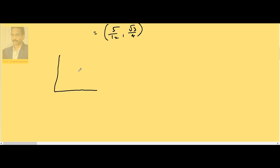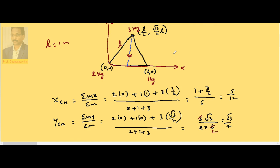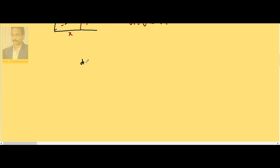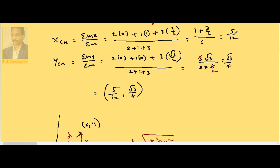The center of mass has coordinates (5/12, √3/4). Since the 2 kg mass is at the origin, the distance d from the origin to the center of mass is d = √(x_cm² + y_cm²).